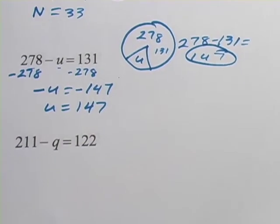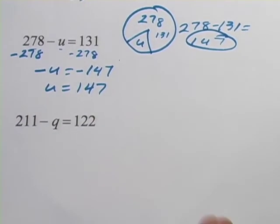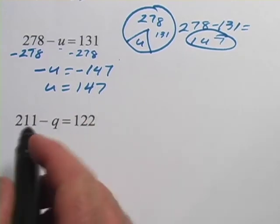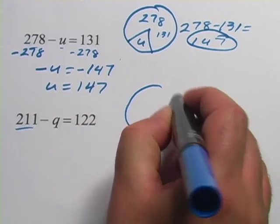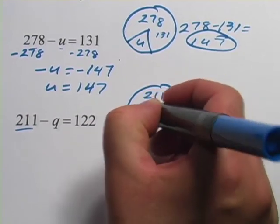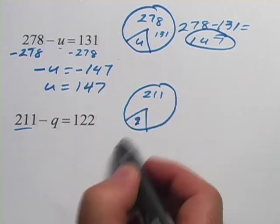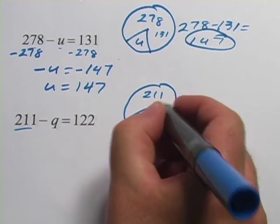Let's try one more of those. So in this one, we have 211 minus q equals 122. So the whole big pie is 211. We have some sliver of it that's called q. If we take that away, what's left is 122.